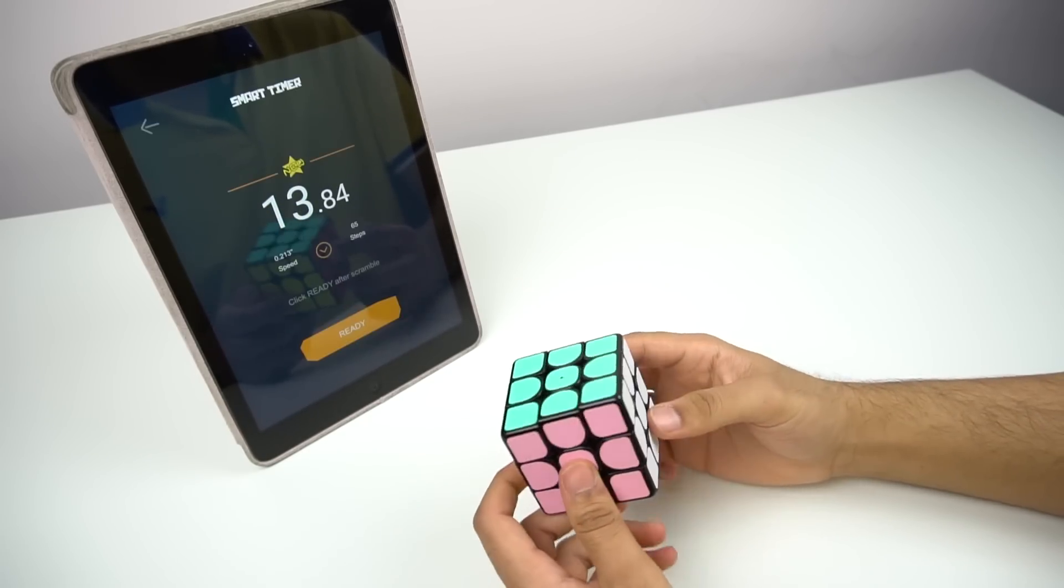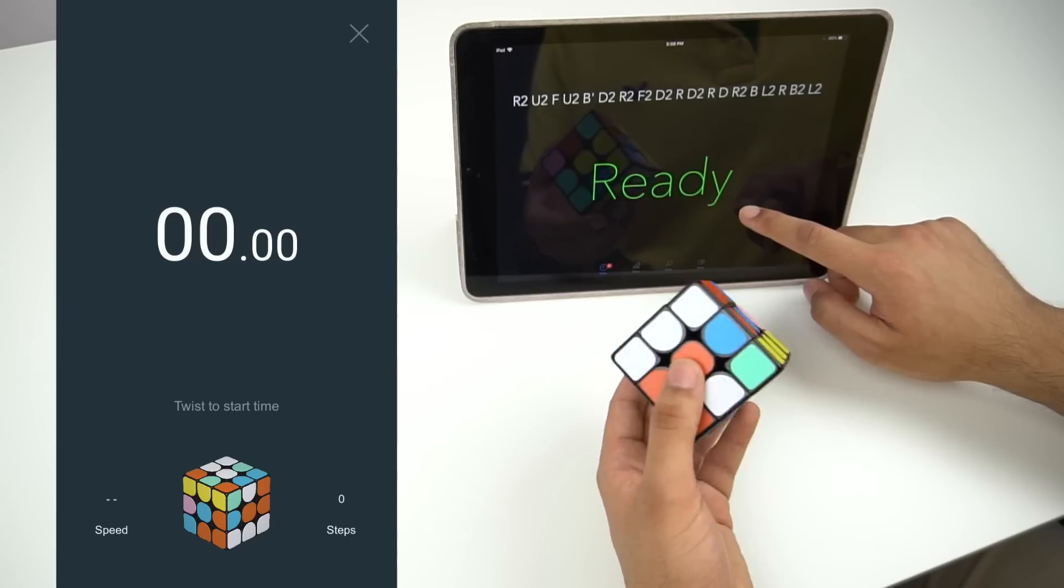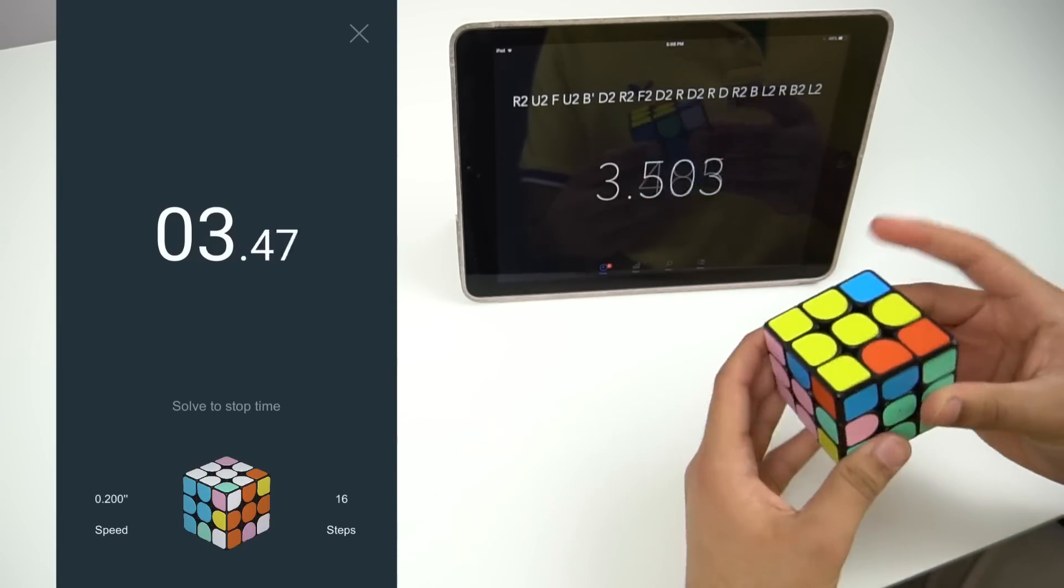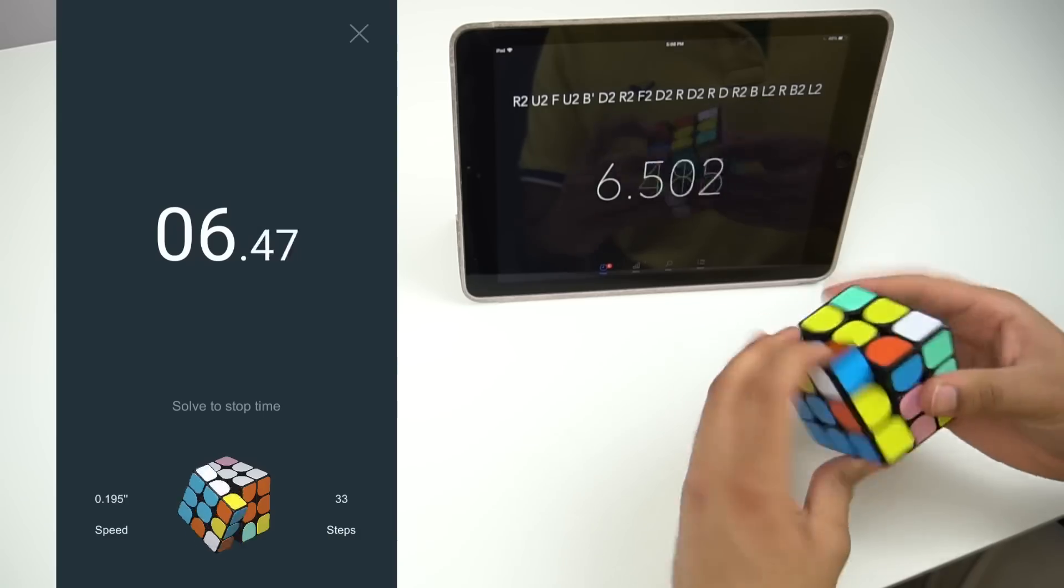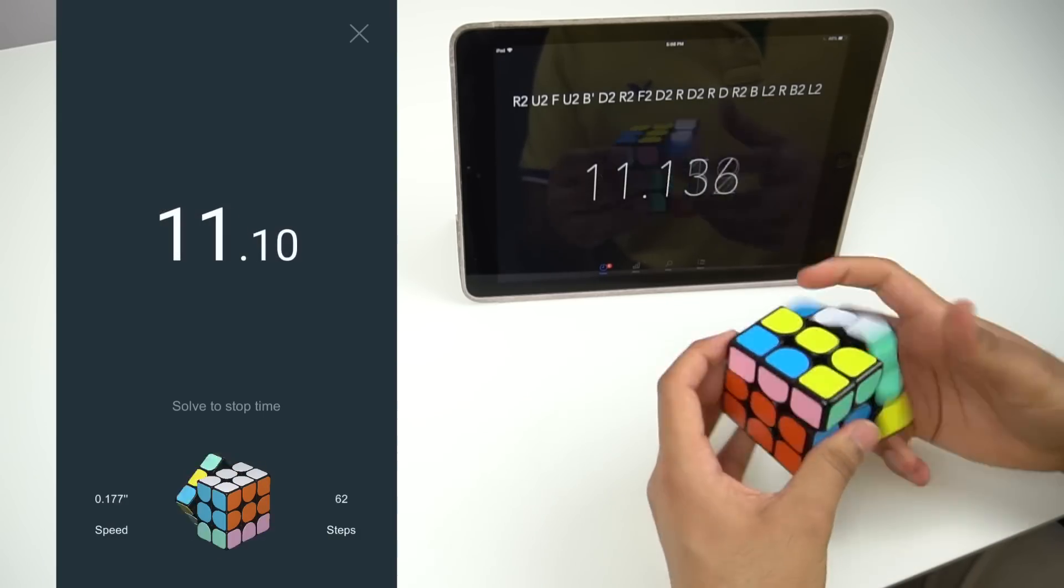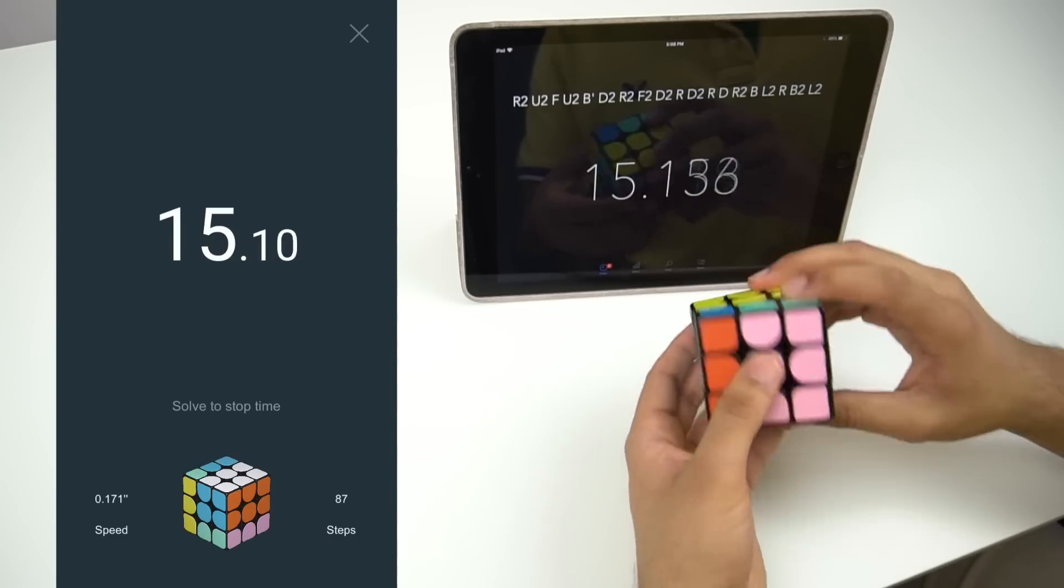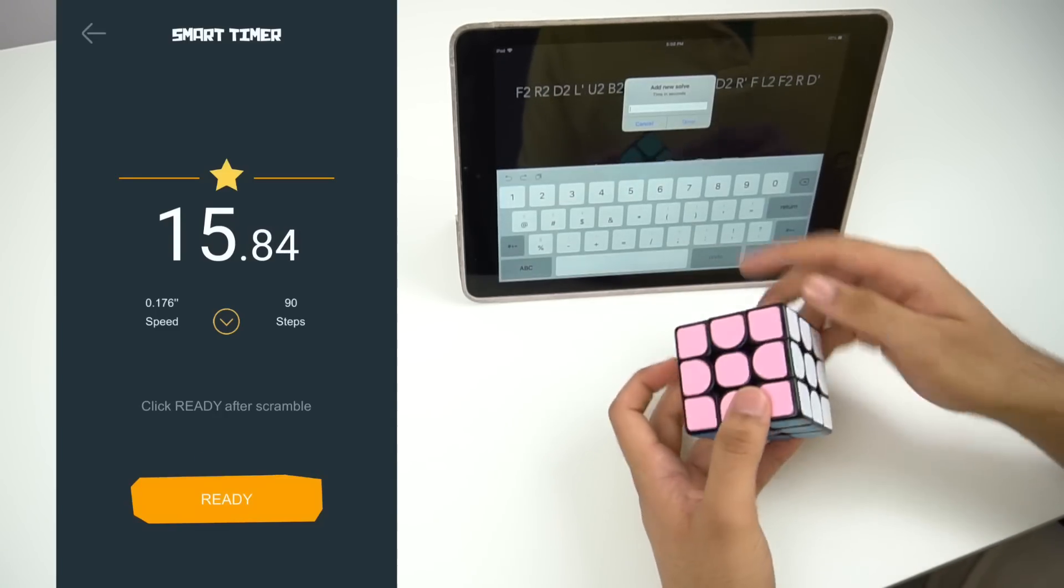But overall, I've found the smart timer to be fairly accurate. When comparing it with other timers like a stack mat or just a regular touch timer on your iPad, my times are usually around half a second faster, even though I know my solves are really bad overall on this cube, but that's just because of the color scheme.